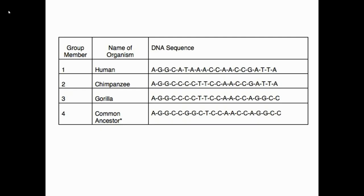This is very important. You need to be able to look at organisms, compare their DNA sequences, and determine which organisms are most closely related or share a common ancestor based on those sequences. Here we have the human, the chimpanzee, and the gorilla. Their DNA sequences differ a little because they're different organisms, but they are very similar. This suggests that these three organisms share a common ancestor, and because their nucleotide sequences are very similar, we can confirm that.